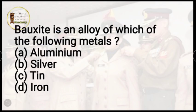Question number 4: bauxite is an ore of which of the following metal? Options are aluminium, silver, tin, or iron. The correct answer is option A, aluminium.